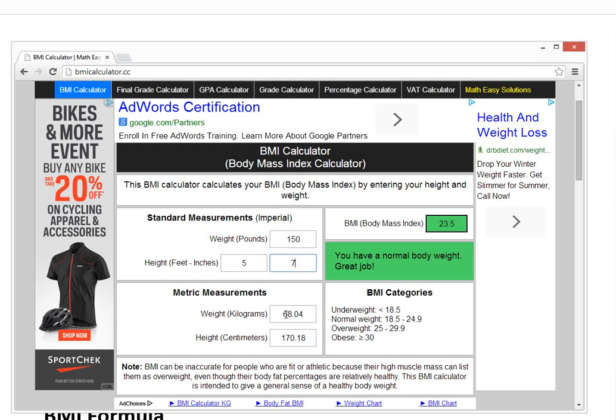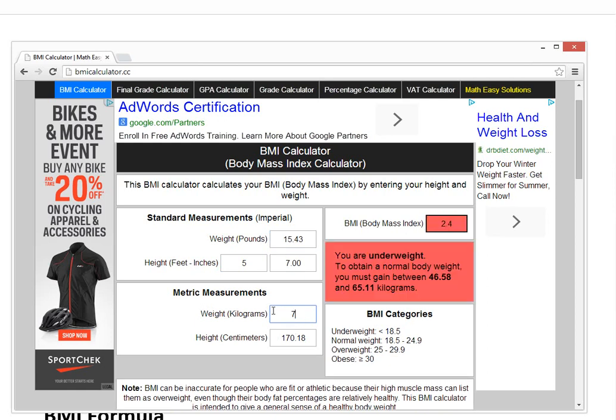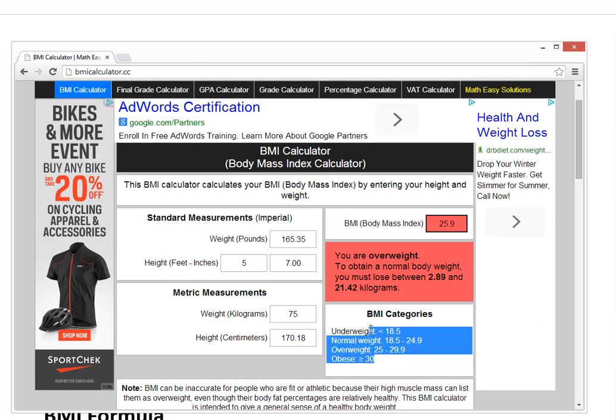So you could check this out and it's much quicker than the other one. You could put weight in pounds 150 and then let's say you're five foot like me, seven inches automatically calculates and it tells you we have a normal body weight. Great job.